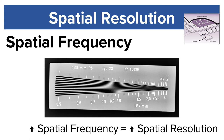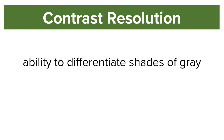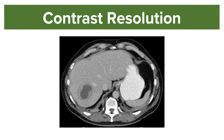Now we'll switch gears and talk about contrast resolution. Contrast resolution is the ability to distinguish structures with similar subject contrast — for example, being able to tell the difference between fat and muscle, or the difference between a liver and spleen. Regular diagnostic radiography does a poor job at this, but CT and MR have excellent contrast resolution.